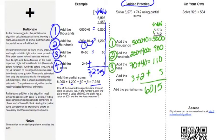Your job now is to do the last problem on your own. It's 325 plus 564. Go ahead and pause the video at this point so that you can work it out, and then there will be a solution.